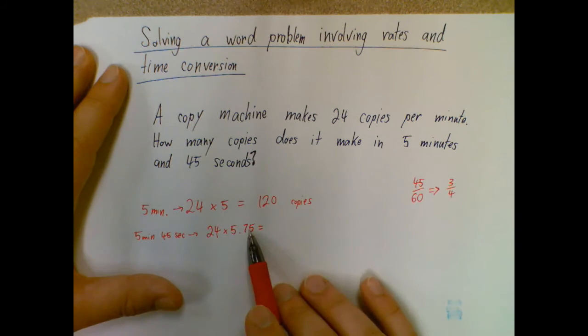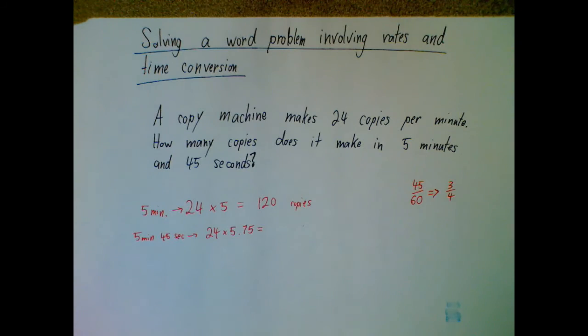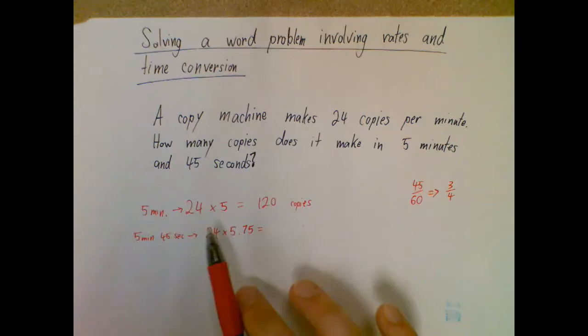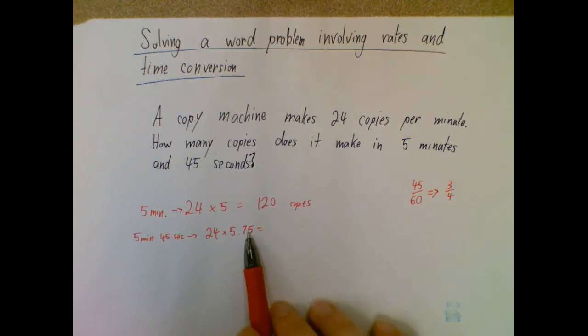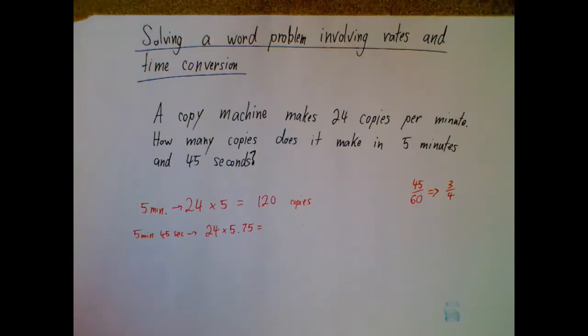All right. So now I'm looking at this. I know it should be a little bit more than 120. How you want to set this up is kind of up to you. But since I already did 24 times five, I don't necessarily have to do that part again. So the way I approach this is I'm just going to figure out what 24 times 0.75 or three fourths of 24 is and add it in to that.